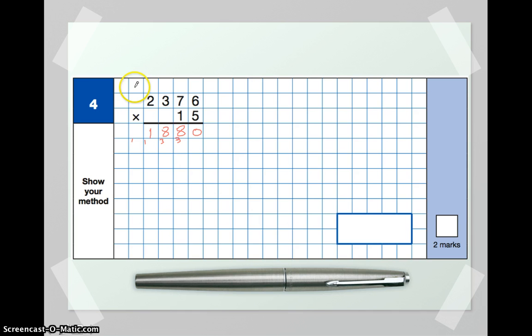As we've got no more multiplying in the tens of thousands, our 1 here is just going to simply sit on the end there to give us 11,880.